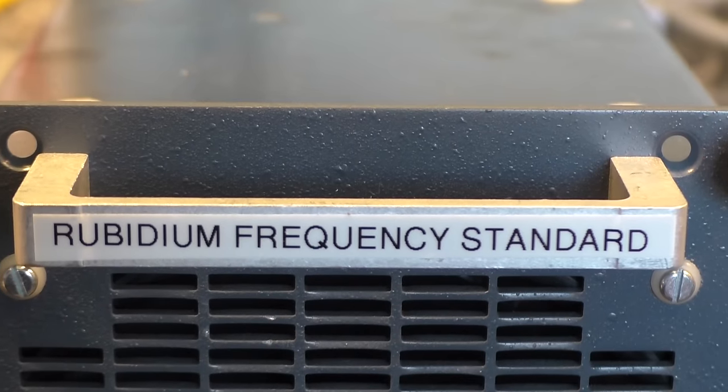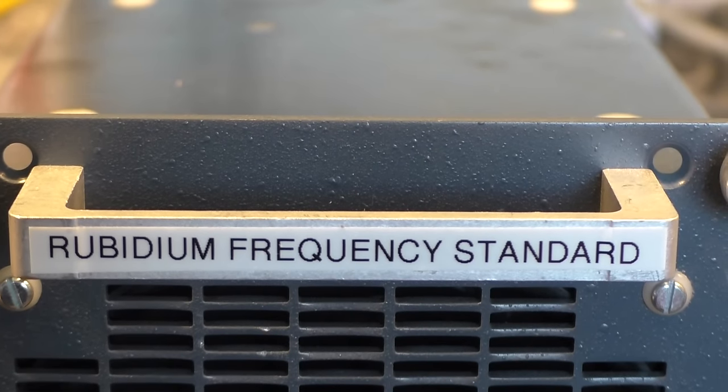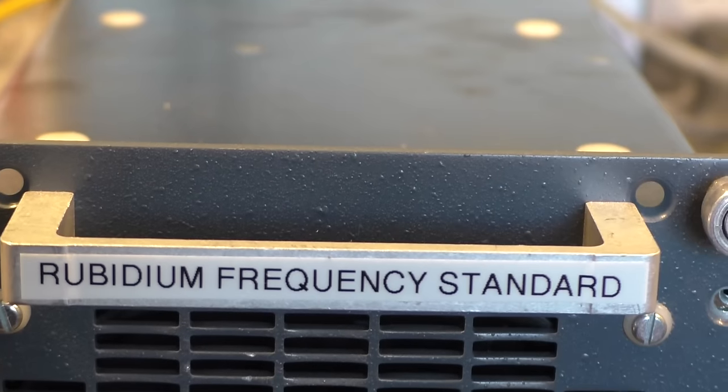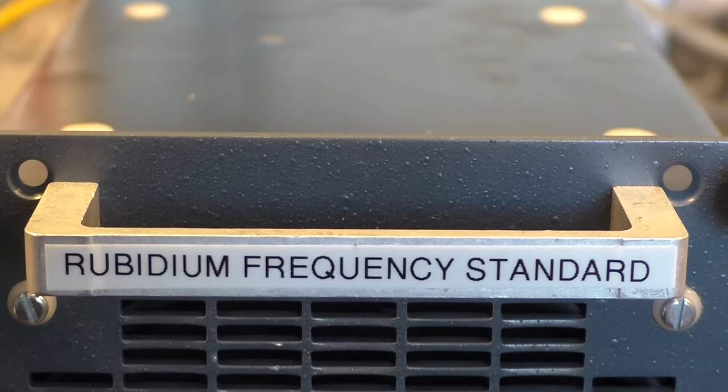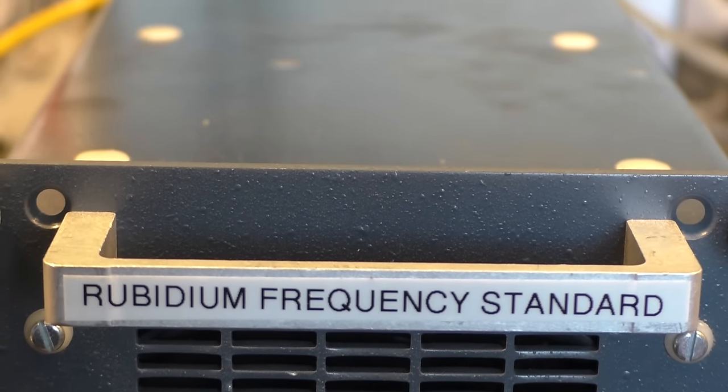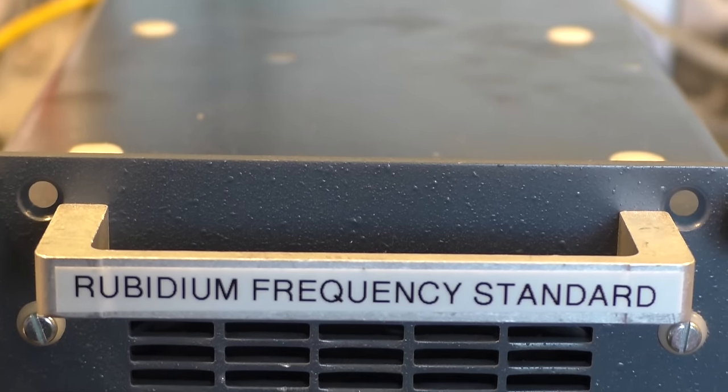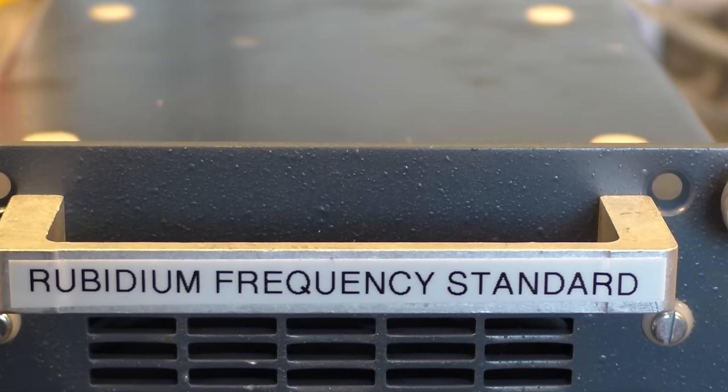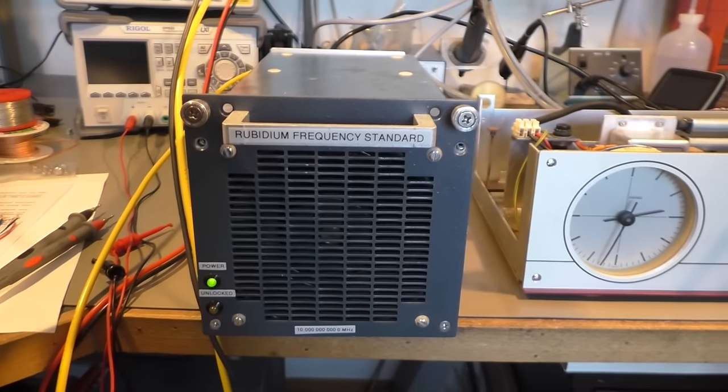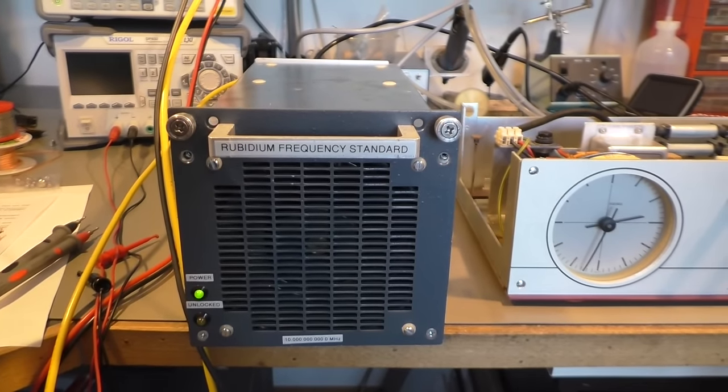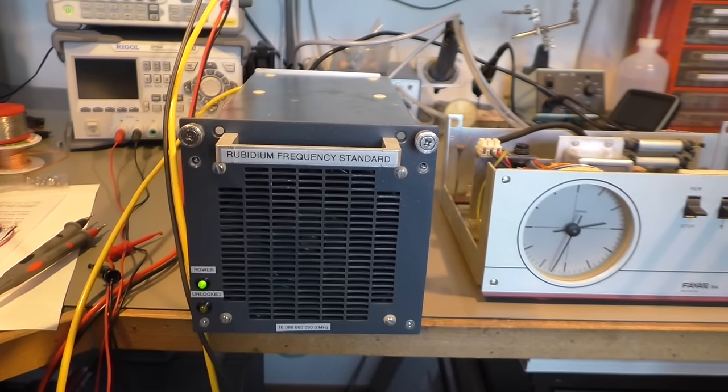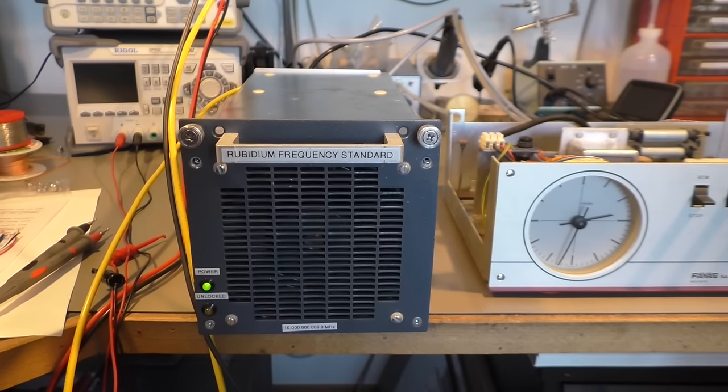But the question is now, how precise is it? One of the most precise frequency references would be a rubidium oscillator. Of course there are more precise oscillators, but that's simply something I can't afford. A rubidium oscillator is something you can find on eBay for about $150.